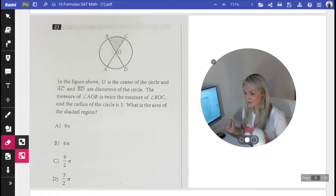What we're told is that the measure of AOB is twice the measure of BOC. Some of my students have a hard time translating words into mathematical equations and it's not clear: is it two times AOB equals BOC or is it AOB equals two times BOC.